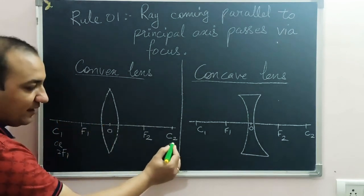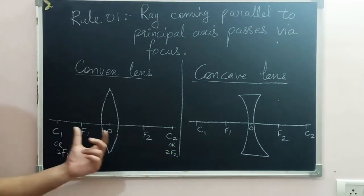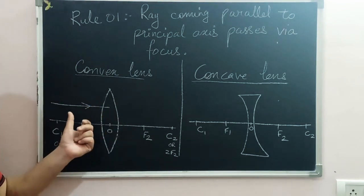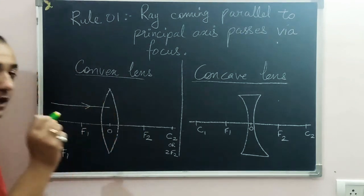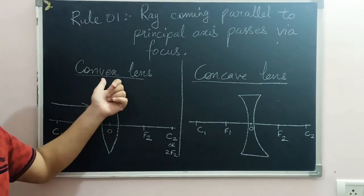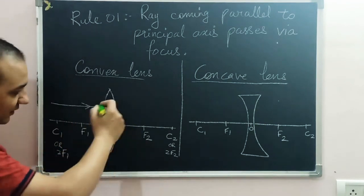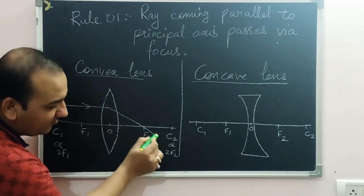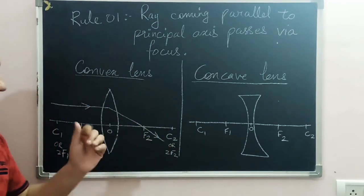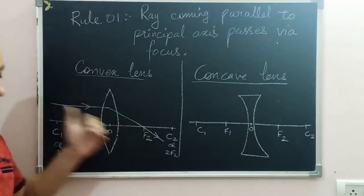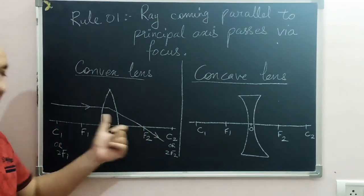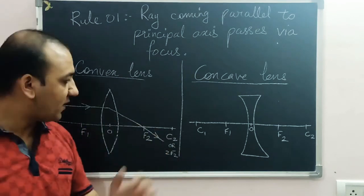Similarly, c2 can be said as 2f2. Now if a ray is incident parallel to the principal axis on a convex lens, it will pass through the focus. A convex lens is converging in nature, so it will converge the ray toward the focus on the other side. Remember to put arrows on both sides of the lens — missing arrows can cost you marks in exams.